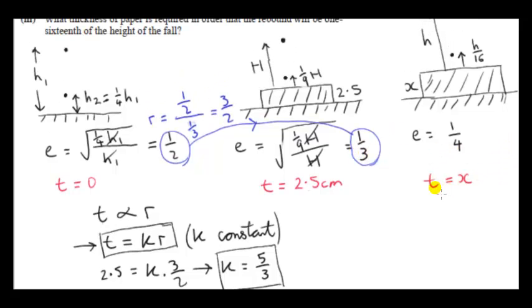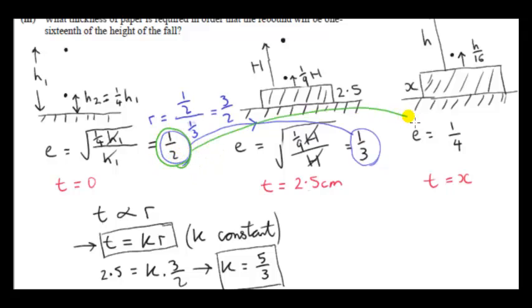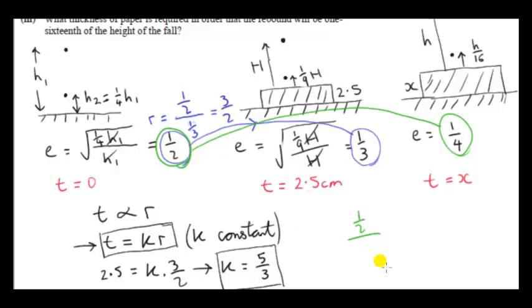Now we look at the situation when the thickness is x. What's the reduction factor from t equals 0 to t equals x? We want the reduction factor that takes us from one half to one quarter, so we decrease one half by R to get one quarter. R equals one half divided by one quarter, which gives R equals 2.